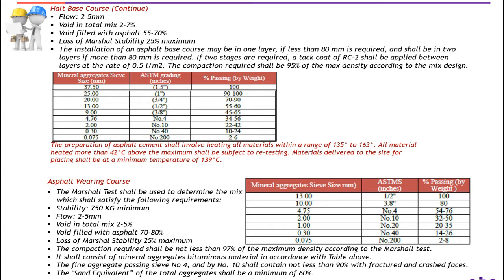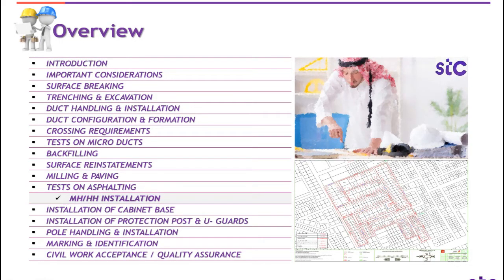It shall consist of mineral aggregate and bitumen material in accordance with the table shown above. The fine aggregate passing sieve number 4 and retained by number 10 shall contain not less than 90% with fractured and crushed faces. Sand equivalent of the total aggregate shall be a minimum of 60%. A table shows some mineral aggregates along with ASTM sizes in inches and values of passing percentage by weight.